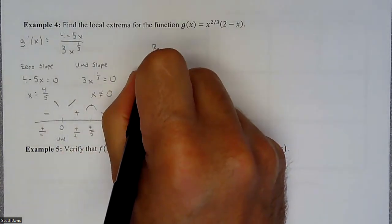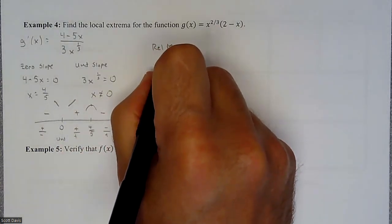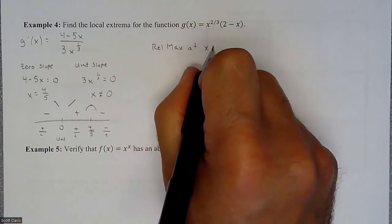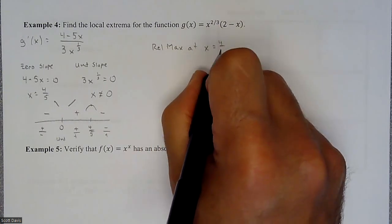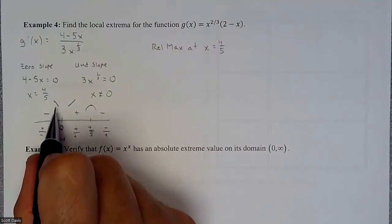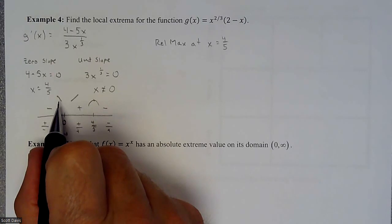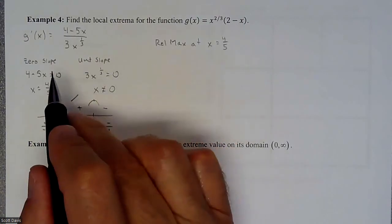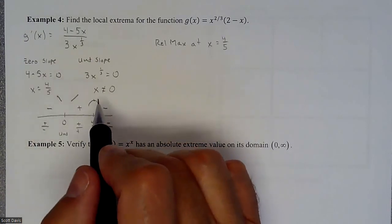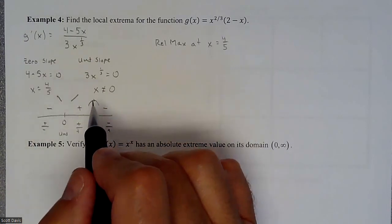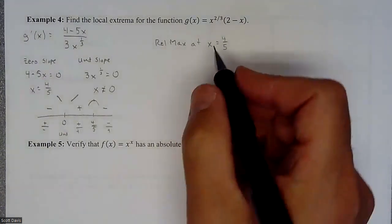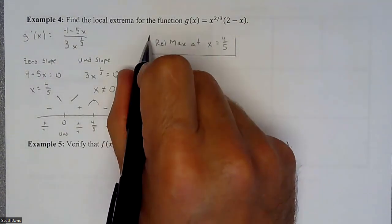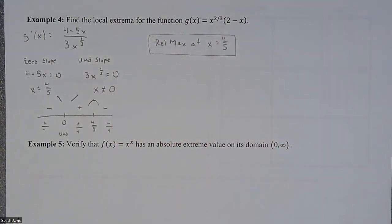So we're going to have at minimal, a relative max might be an absolute, relative max at x equals four fifths. And then most likely we have some sort of a minimum. We'd have to dig a little bit deeper on that. But for our local extrema, we're looking for when we have a zero slope that transitions nicely from a positive to a negative or a negative to a positive. So that was finding some local extrema on a little bit more complicated problem.